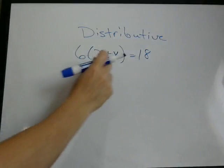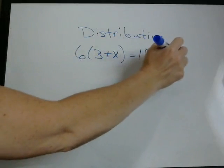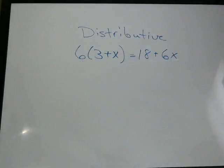Plus 6 times x, which is 6x. So these two ways to write that are the same. 6 times 3 plus x is the same as 18 plus 6x.